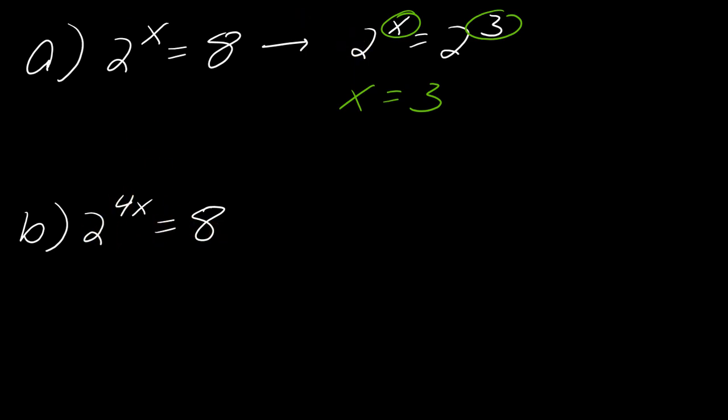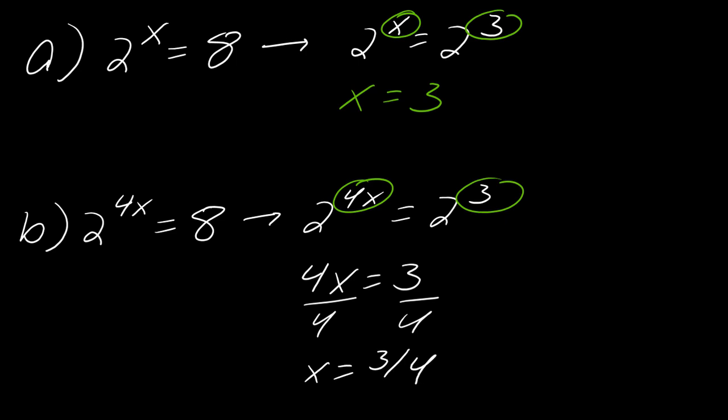Now, what about in this case here where you have a slightly more interesting exponent? It's still the same idea. So I'm going to have this be 2 to the 4x equals 2 to the 3. And then once again, I can take these exponents out. So I can rewrite this now as 4x equals 3 and then I can just solve for x. So this will be x equals 3 over 4.